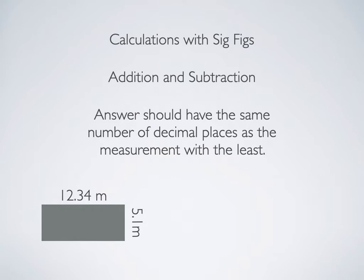Calculations involving sig digs with addition and subtraction. Your answer should have the same number of decimal places as the measurement with the least. This is one way to think about it. Another way to think about it is you can only have one estimated digit in your answer.